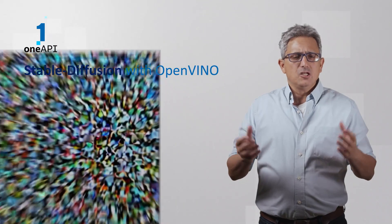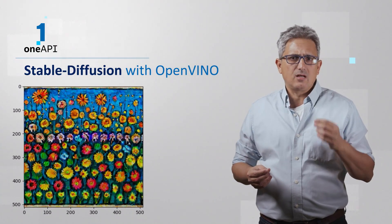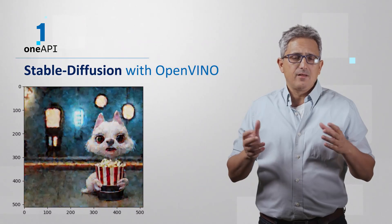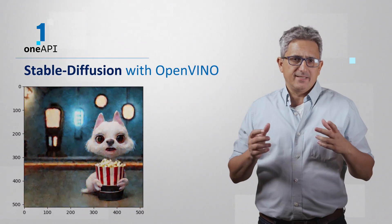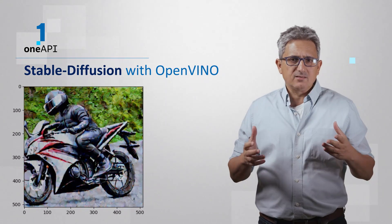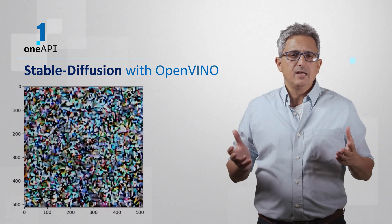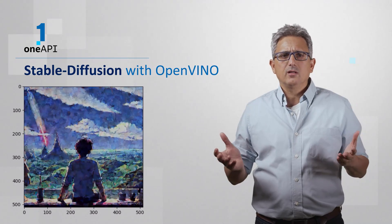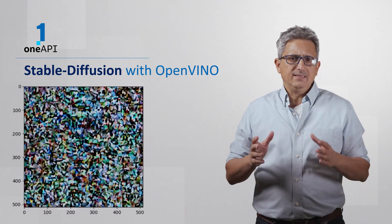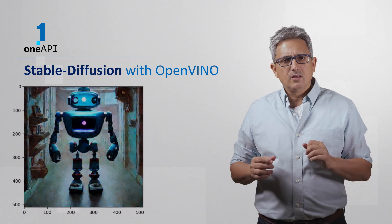Welcome back. Generative AI catches our eyes. We said that machines are getting intelligent, but this looks like creativity. How does it work? How can you run it in detail, step by step?